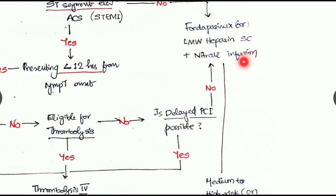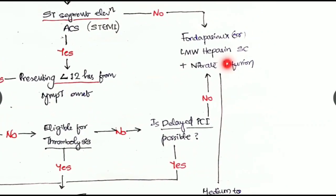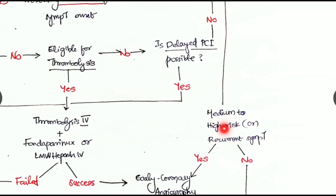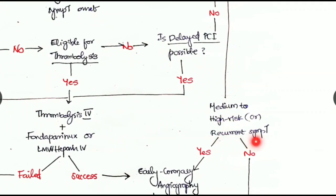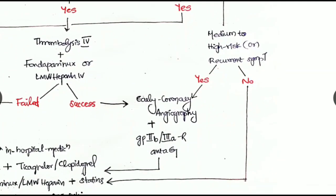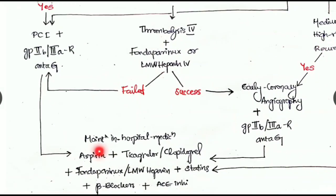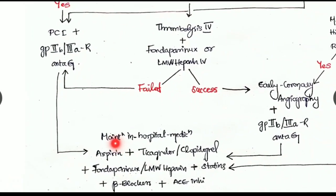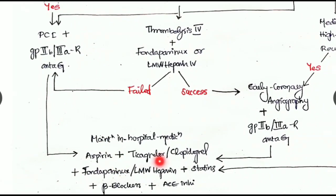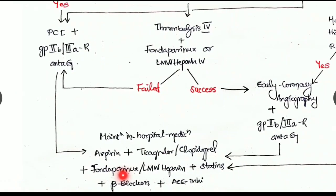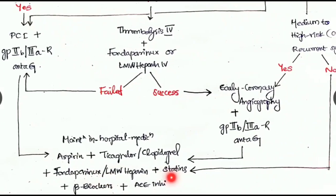After giving this, check whether any medium to higher risk possibilities or any recurrent symptoms or not. If yes, then we have to go for early coronary angiography combined with GP2b3a receptor antagonist. Towards the end, after PCI with GP2b3a receptor antagonist or after early coronary angiography with GP2b3a receptor antagonist, we have to go for maintenance of hospital medication with aspirin, ticagrelor or clopidogrel, with fondaparinux or low molecular weight heparin, with statins, with beta blockers and ACE inhibitor therapy.